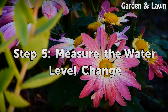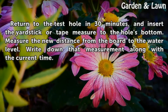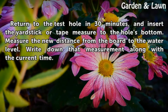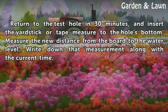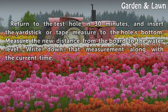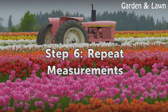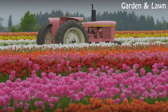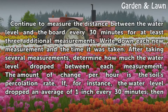Step 5: Measure the water level. Return to the test hole in 30 minutes and insert the yardstick or tape measure to the hole's bottom. Measure the new distance from the board to the water level. Write down that measurement along with the current time. Continue to measure the distance between the water level and the board every 30 minutes for at least three additional measurements, writing down each new measurement and the time it was taken.